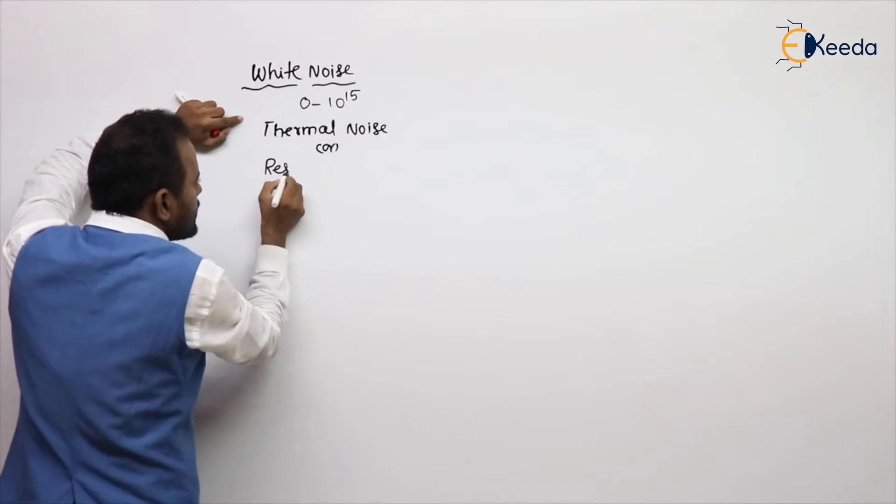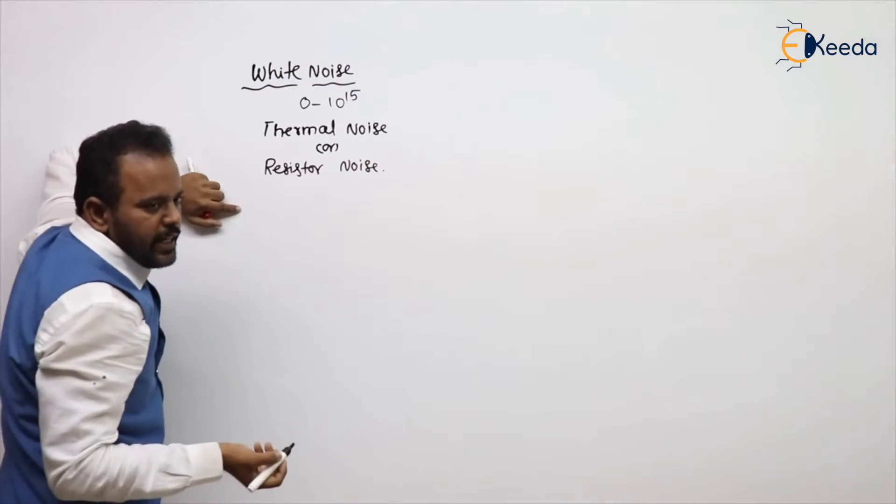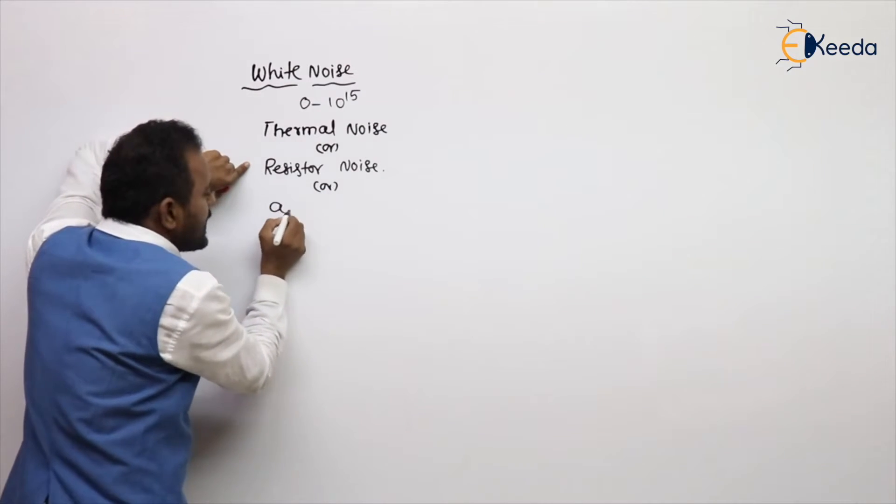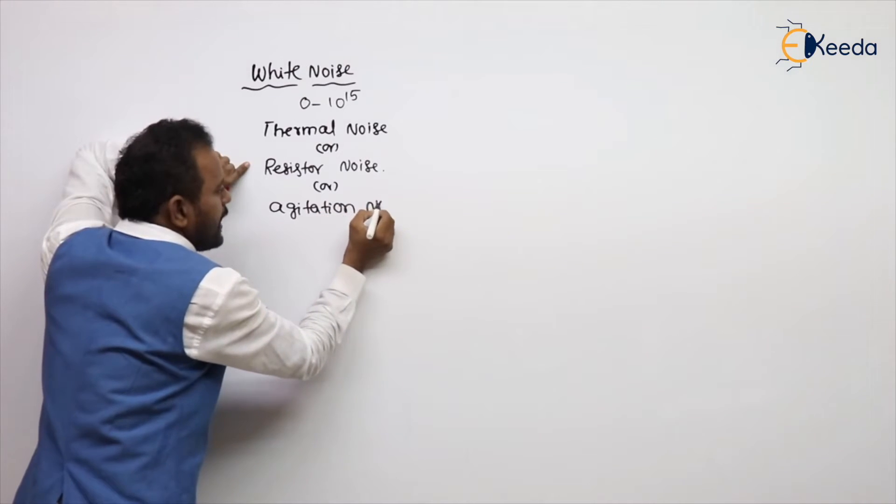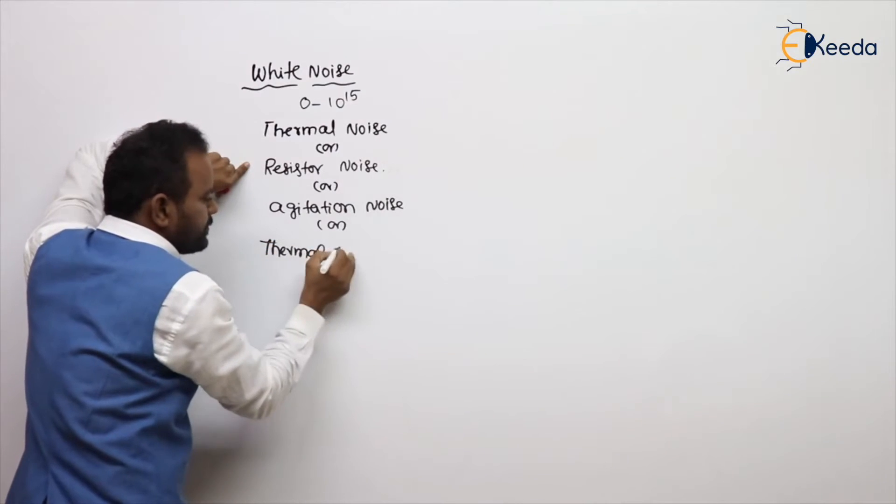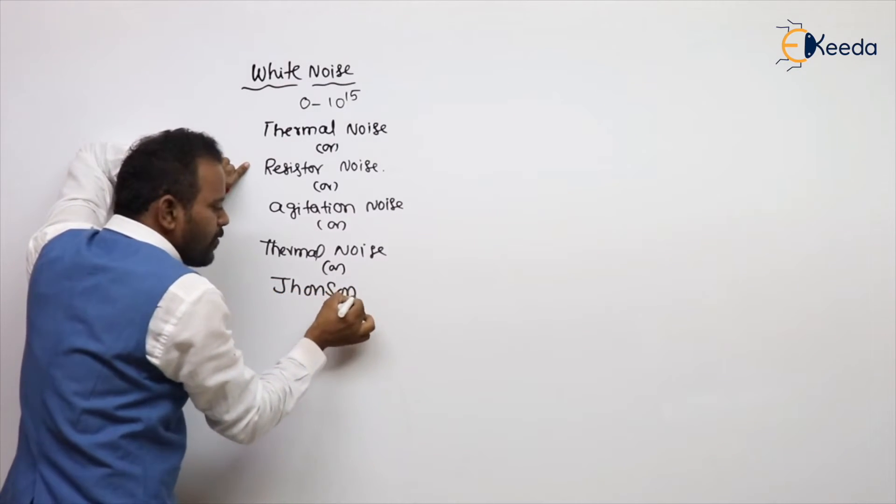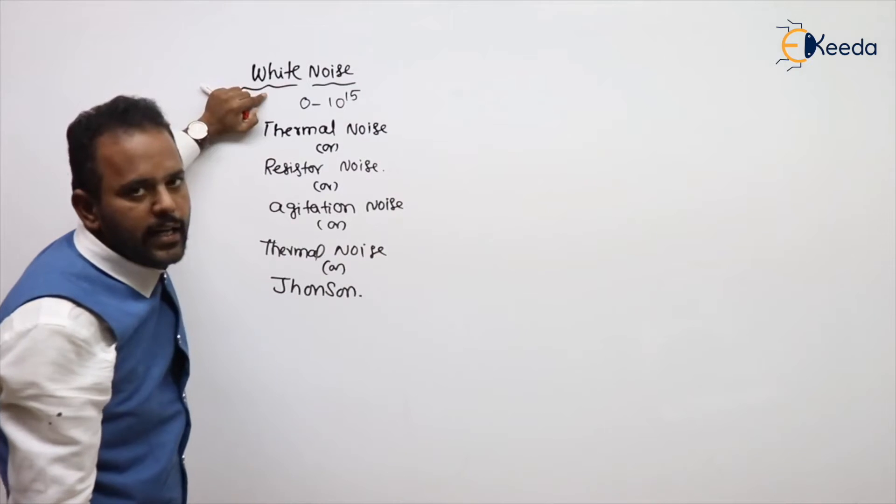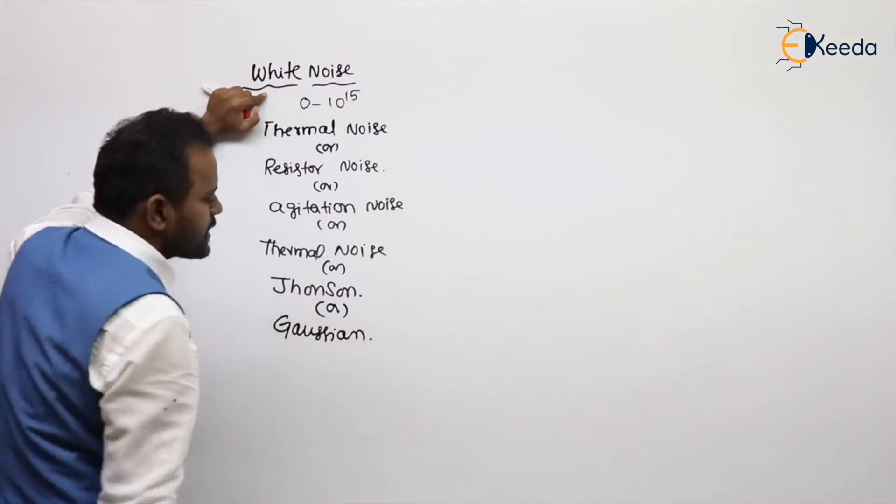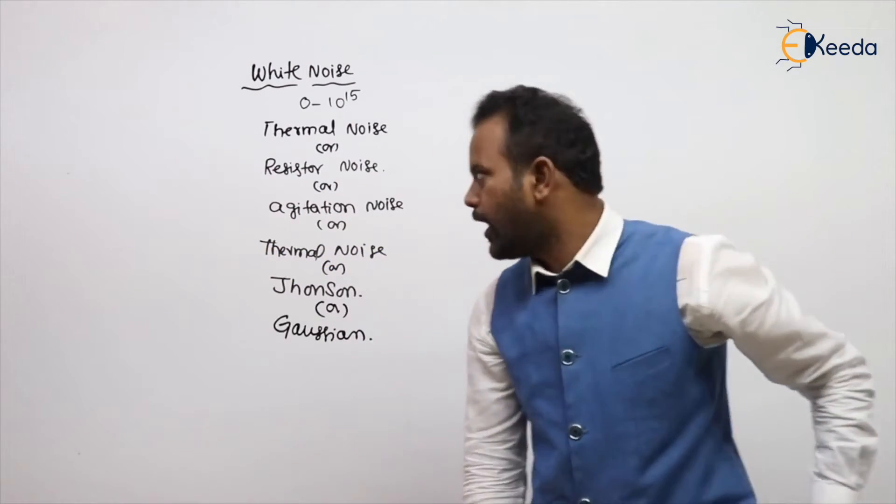Also called resistor noise. Why resistor noise? Heat in the resistor. Also called agitation noise, agitation of electrons. Also called thermal agitation noise. Also called Johnson noise - he is the one who observed about this white noise in 1911. Also called Gaussian noise. We will proceed this as a Gaussian pdf. All the names will be the same about white noise.